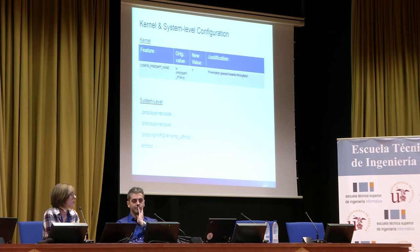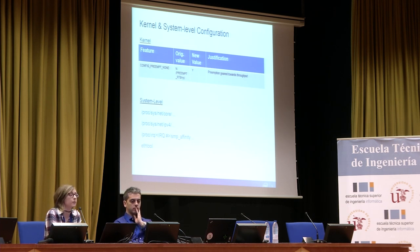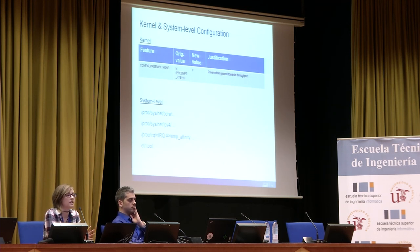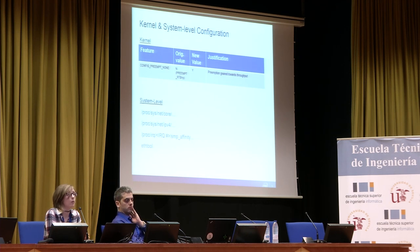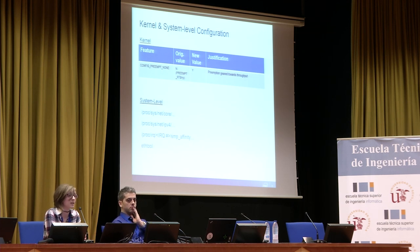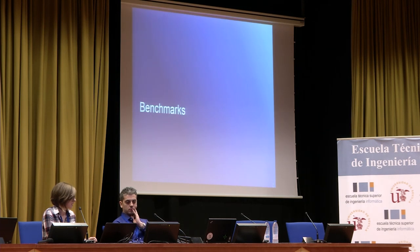We found only one kernel setting that needed to be changed from the default: preempt none. We disabled any kernel code preemption, which is ideal for good throughput. There were also a large number of network core, IPv4, affinitization, and NIC settings changed using the proc filesystem and ethtool. We don't have time to go through them all, but they are in the backup slides and will be available online after the presentation.